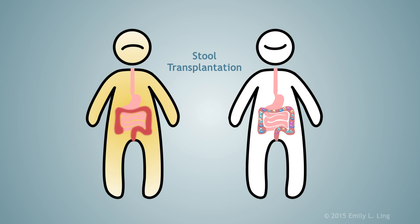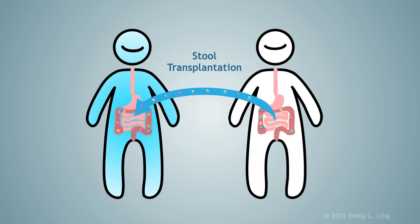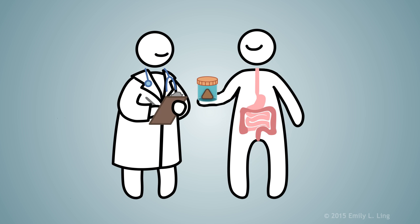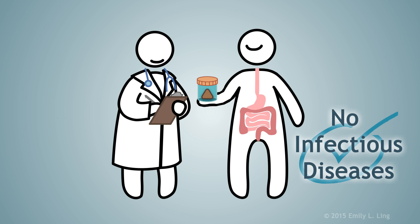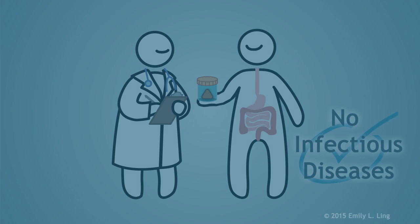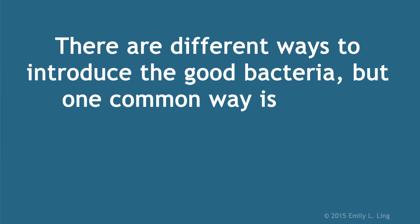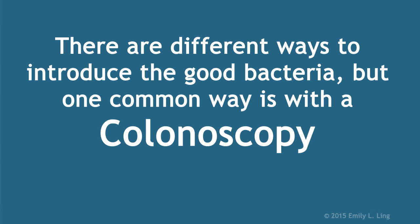Also known as stool transplantation, FMT restores good bacteria in the colon by using the good bacteria from a donor. Stool samples are obtained from healthy donors and are screened to ensure there are no infectious diseases. There are different ways to introduce the good bacteria, but one common way is with a colonoscopy.